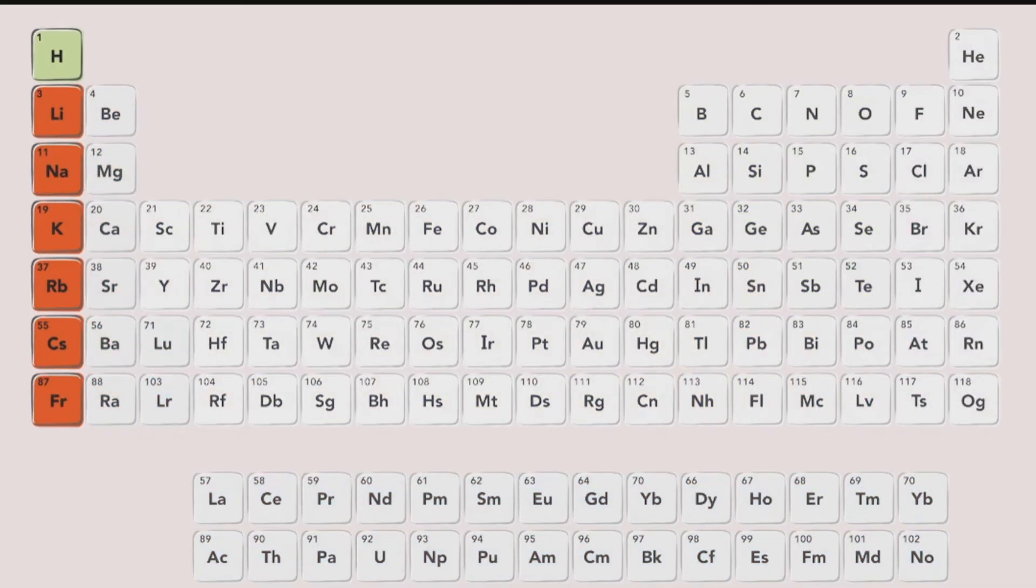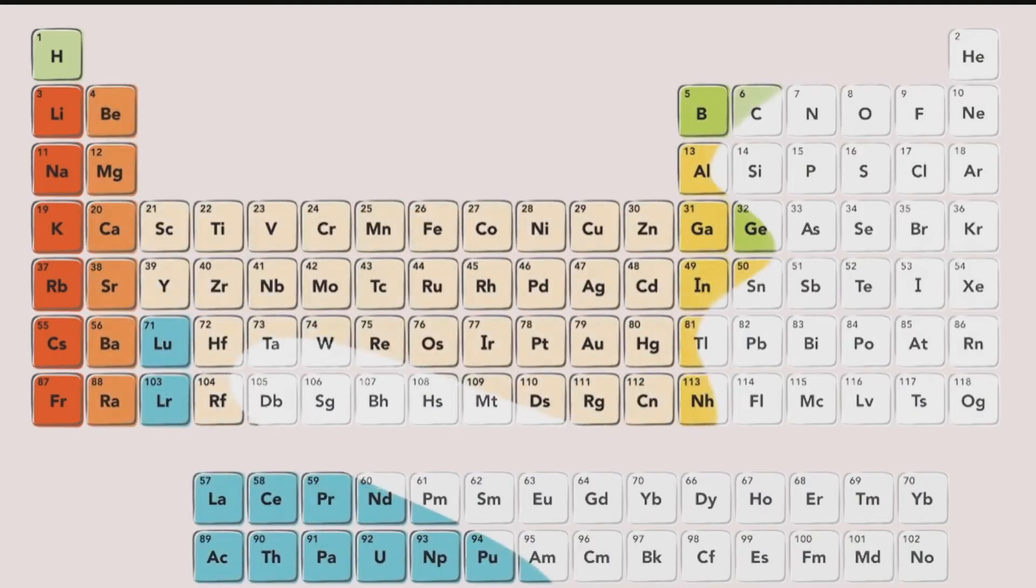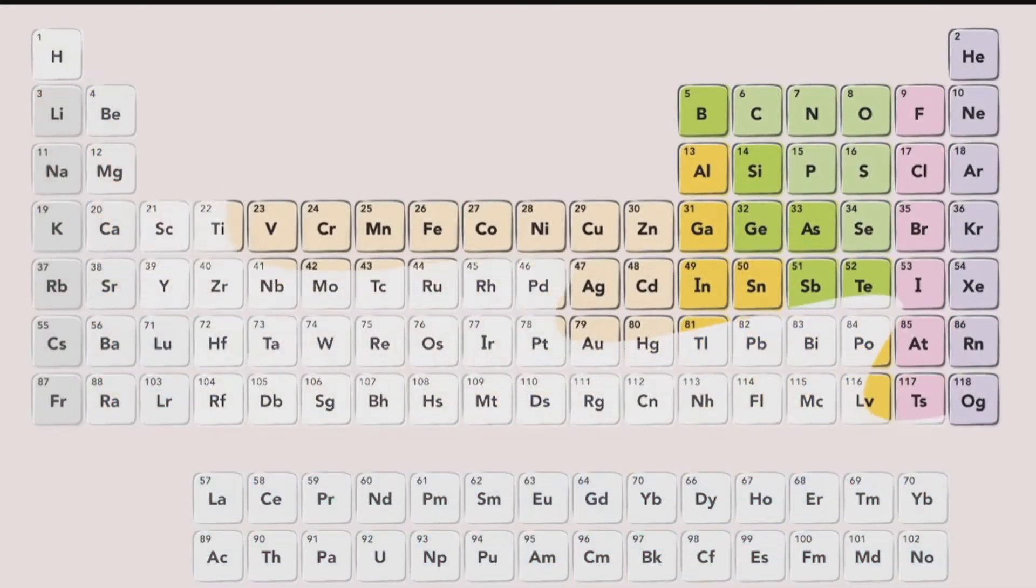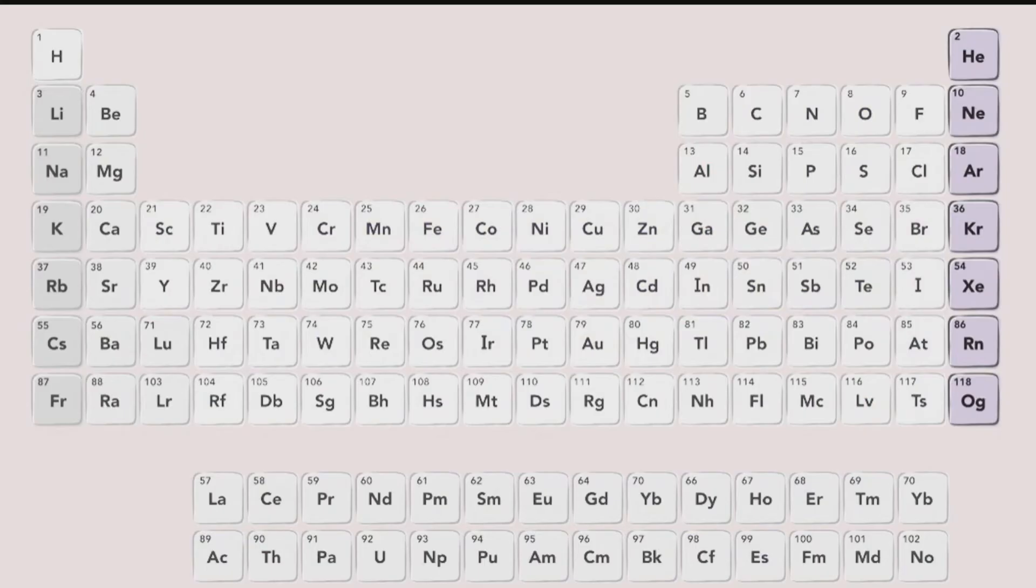For example, the metals in group 1 are highly reactive, soft, and silver-colored, while group 18 elements are unreactive, odorless gases.